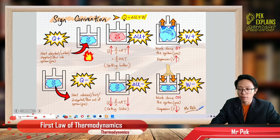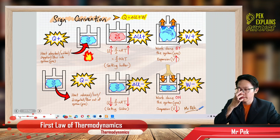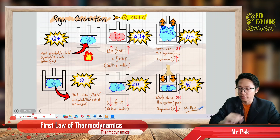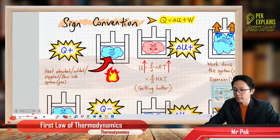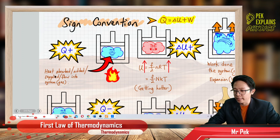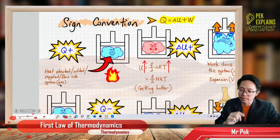We must know the positive and negative sign for each of these three symbols. We need to know when each is positive and when it is negative. For the first one, Q — the heat — Q is positive when the heat is absorbed, added, supplied, or flowed into the system or gas.